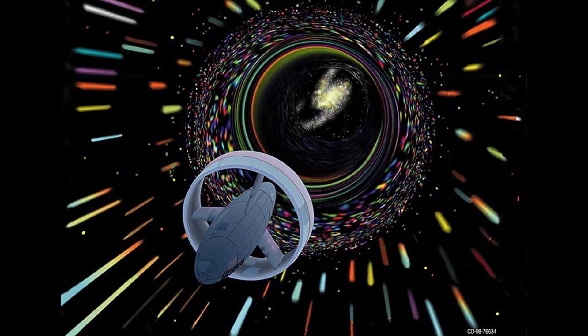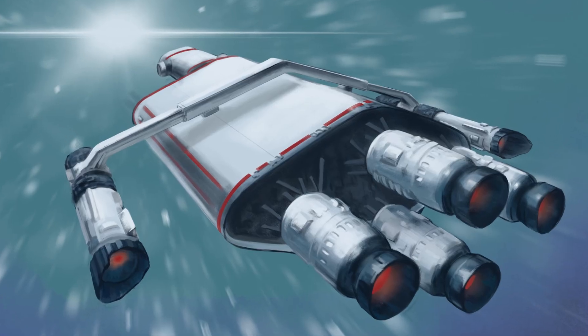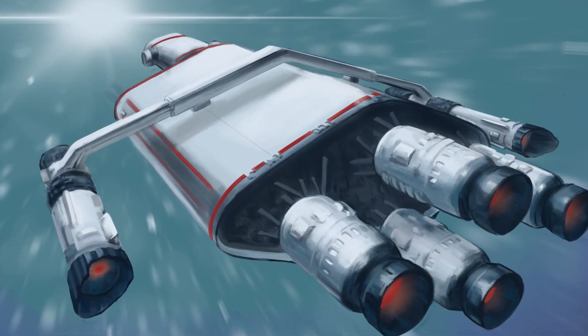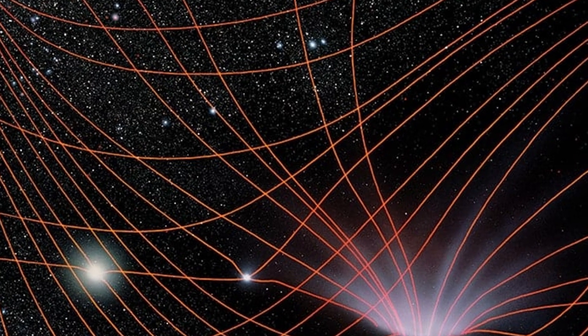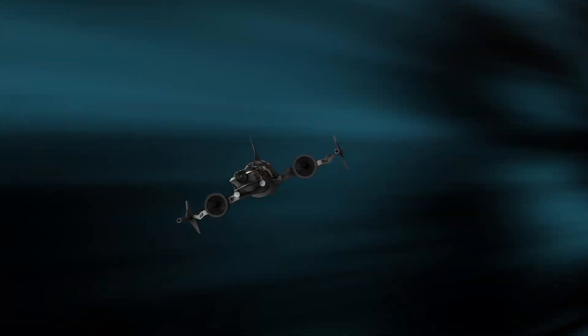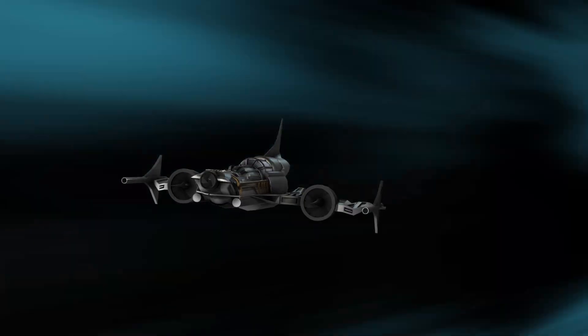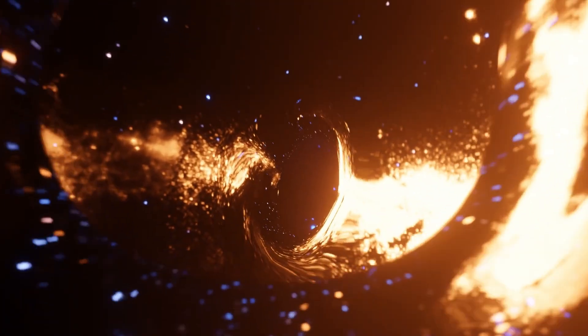Warp drive is a bold idea from theoretical physics that proposes traveling at speeds effectively faster than light without technically violating Einstein's relativity. The ship doesn't accelerate. Instead, space-time moves around it. In front of the ship, space is compressed. Behind it, space is expanded.